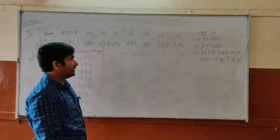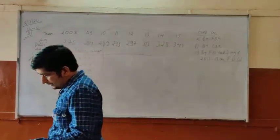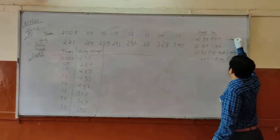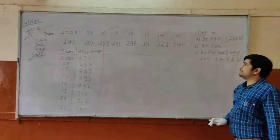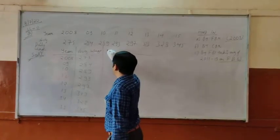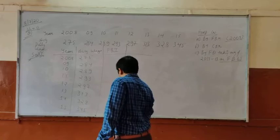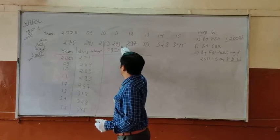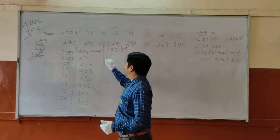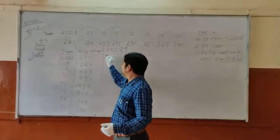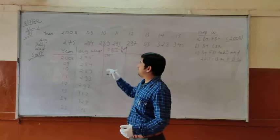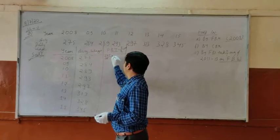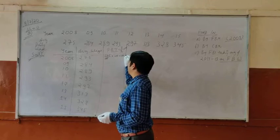Now, coming to the first method that is fixed base method, and this base year is also given, 2008 is given as fixed base year. What is the formula of index number? P1 by P0 into 100. For 2008, P1 is 275, P0 is also 275 into 100. Calculate it.